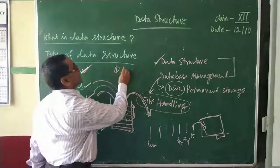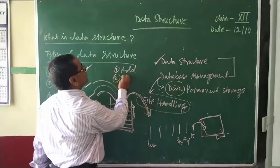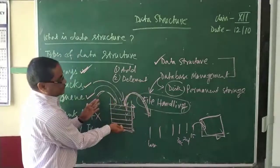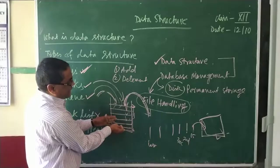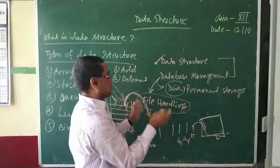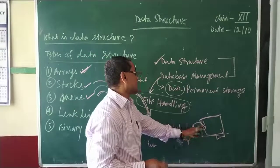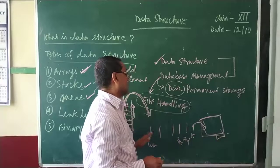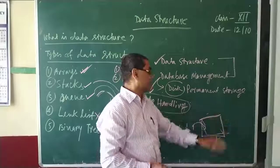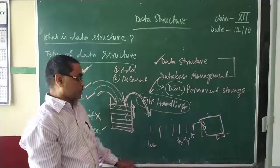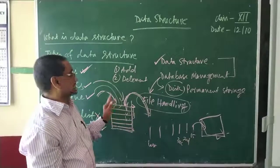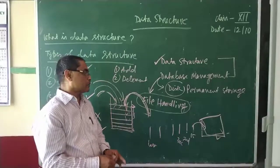There are two basic operations in both stack and queue: one is to add an element and another is to delete an element. How the data goes into the stack and how the data comes out of the stack — and similarly in the queue, how elements are added when creating the queue and how elements are deleted coming out from the queue. Today I will write one program on the stack and explain it, and next class I will give you another one.